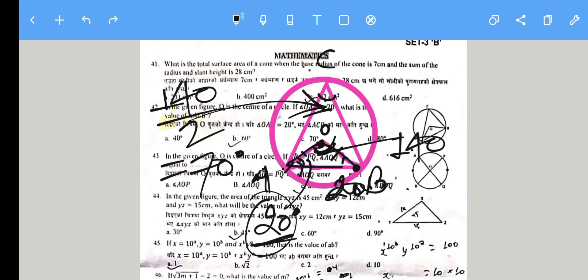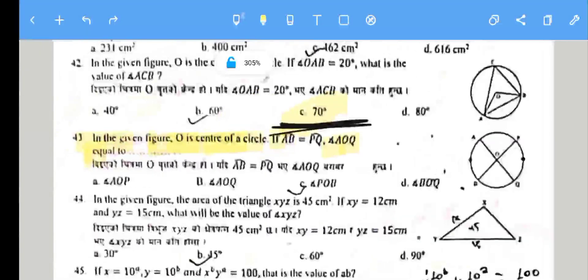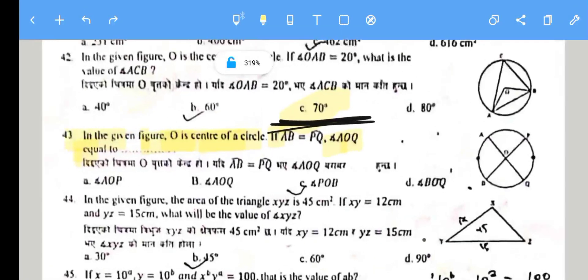70 degrees is the correct answer. Angle ACB equals 70 degrees, so option B is correct. Question 43: In the given figure, O is the center of the circle, AB equals PQ, then AOQ equals POB. The correct answer is B.